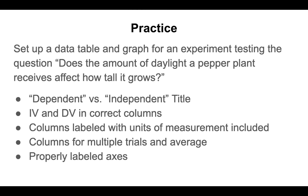Here's what I want you to do: take some time and set up a data table and a graph for an experiment that tests this question — does the amount of daylight a pepper plant receives affect how tall it grows? You don't need to put in any numbers or actually do the experiment, but practice setting up the data table and the graph. Make sure you have a dependent versus independent title, variables in their correct columns, columns labeled with units of measurement, columns for multiple trials and an average, and that the graph is properly labeled. Let me know if you have any questions, and we'll talk to you soon.